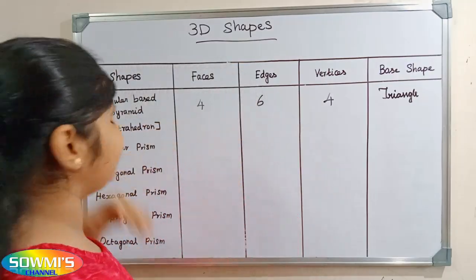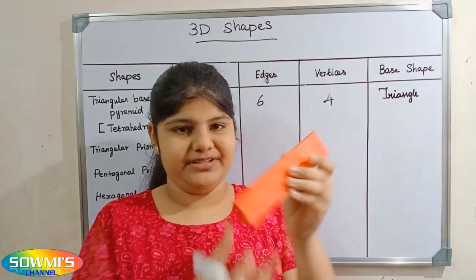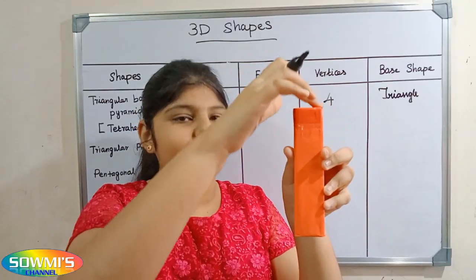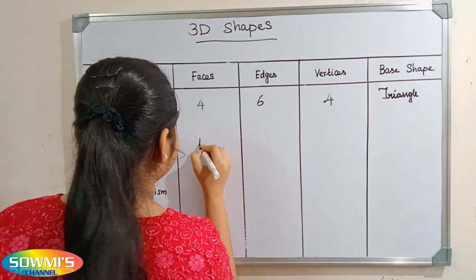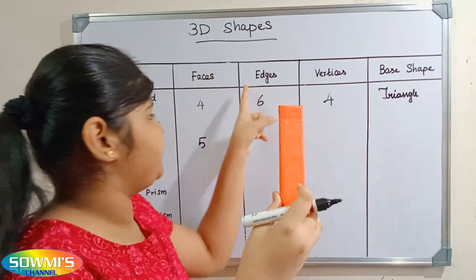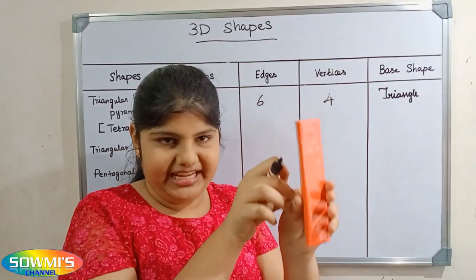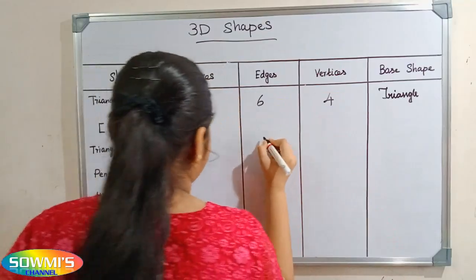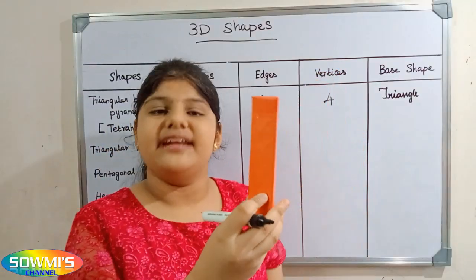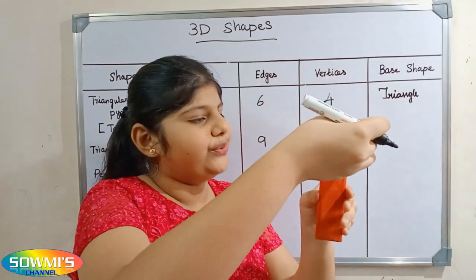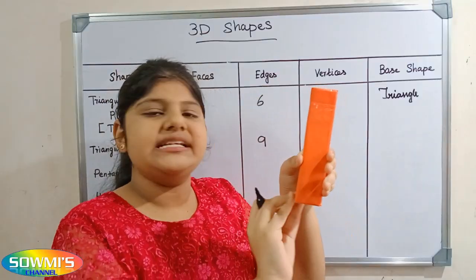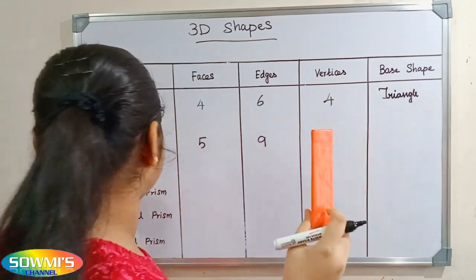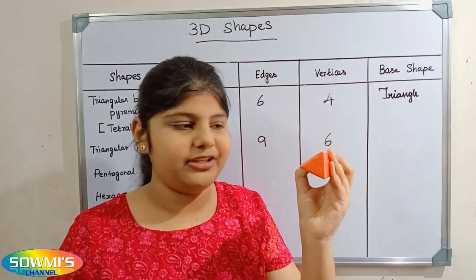Next we will take the triangular prism. We count the faces: 1, 2, 3, 4, 5 — there are five faces in triangular prism. Next we count the edges: 1, 2, 3, 4, 5, 6, 7, 8, 9 — there are nine edges in triangular prism. Next we count the vertices: 1, 2, 3, 4, 5, 6 — there are six vertices in triangular prism. The base shape of triangular prism is triangle.